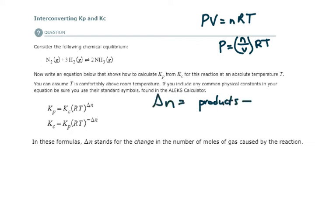Delta n is equal to moles of products minus moles of reactants.